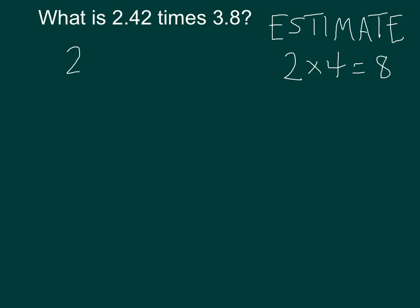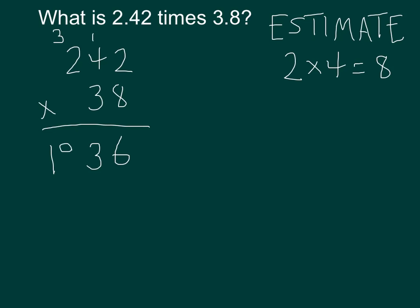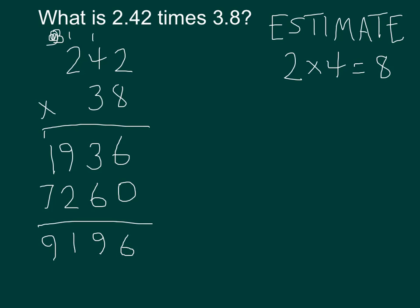Now it's time to write down the numbers: 242 times 38. 8 times 2 is 16 — there's the 6, carry the 1. 8 times 4 is 32, plus 1 is 33, carry the 3. 8 times 2 is 16, plus 3 is 19. Now I'm going to focus on multiplying by the 3, so I need a helpful 0 here. 3 times 2 is 6. 3 times 4 is 12 — carry the 1. 3 times 2 plus 1 is 7. We've got a 6, a 9, an 11 — carry the 1. That's a 9.